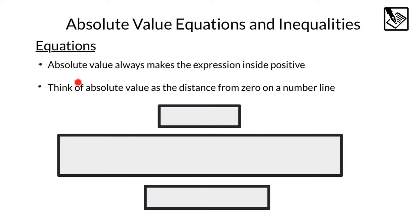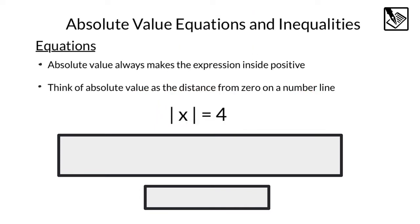Four equations. Now, absolute values always make the expression inside positive — that's what we know about absolute values. But we want to think about absolute values as the distance from zero on a number line. So, for example, if we had absolute value of x equals 4, we're saying this number in here is 4 spaces away from zero.